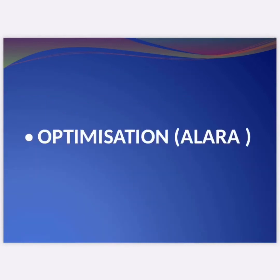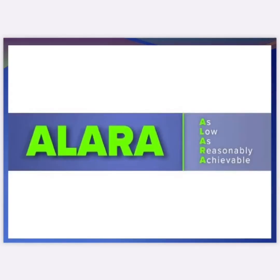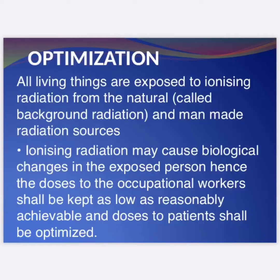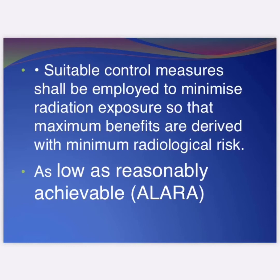The third principle is optimization. All living things are exposed to ionizing radiation from natural background radiation and man-made radiation sources. Ionizing radiation may cause biological changes in the exposed person. Hence, doses to occupational workers shall be kept as low as reasonably achievable (ALARA), and doses to patients shall be optimized. Suitable control measures shall be employed to minimize radiation exposure so that maximum benefits are derived with minimum radiological risk.